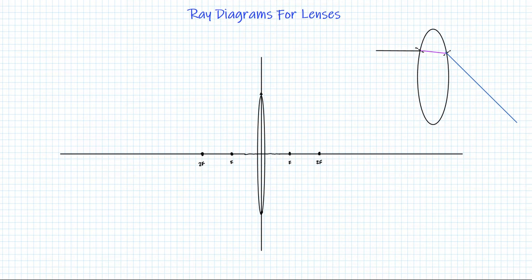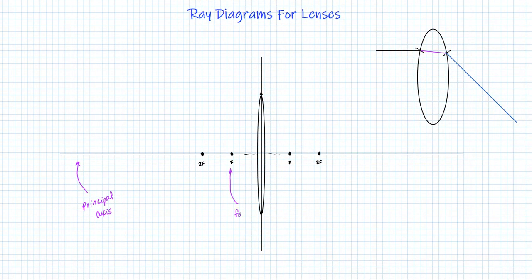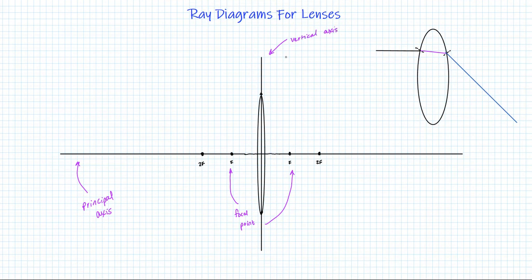A few quick things to describe. This line is known as the principal axis — think of it like the floor of the room where you place the object. We have the focal point of this lens, and lenses have two focal points, one on either side. We also have the double focal length, which for mirrors was called the center of curvature. Here we have our vertical axis, which is where the lens or mirror is placed. We're going to use a graph to help construct these diagrams.